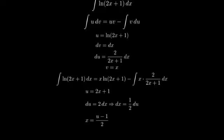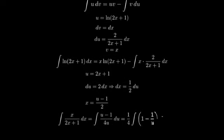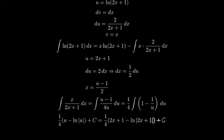Substituting these into our integral, we get the integral of u minus 1 over 2 times 1 over u times 1 half du, which simplifies to 1 fourth times the integral of 1 minus 1 over u du. This integral is straightforward. We get 1 fourth times u minus natural log of absolute value of u plus c.